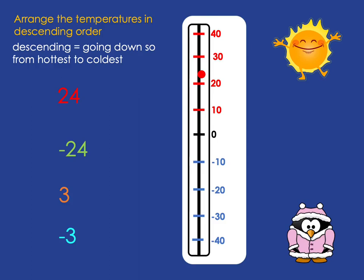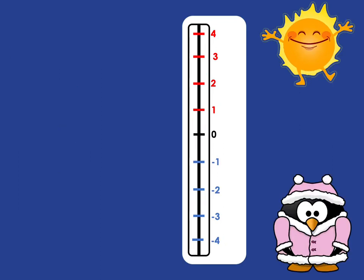24 is somewhere between 20 and 30. Negative 24 is somewhere between negative 20 and negative 30. 3 is just a bit above zero, and negative 3 is just a bit below zero. So putting them in hottest to coldest order: the hottest is 24, then 3, then negative 3, and the coldest is negative 24.